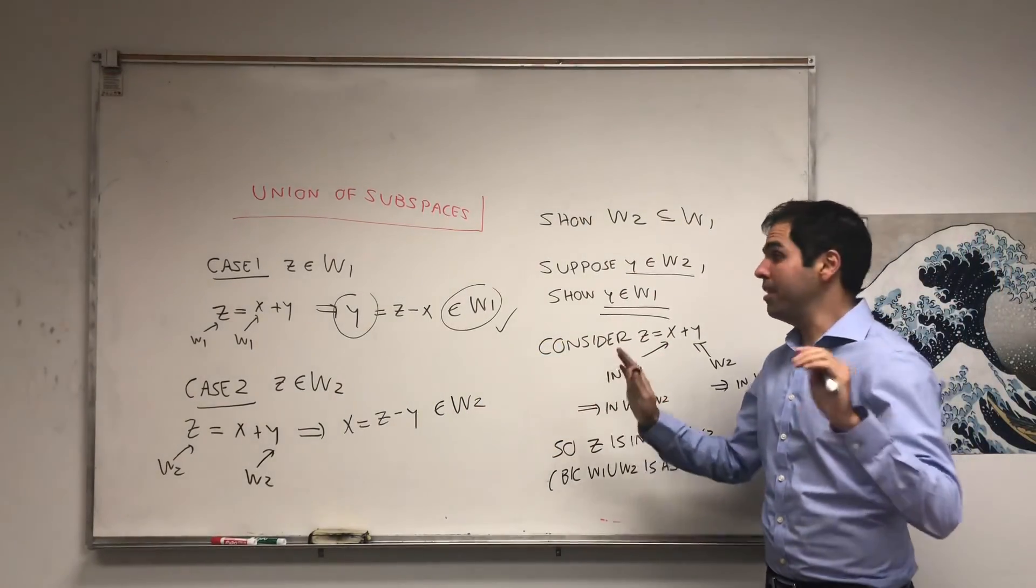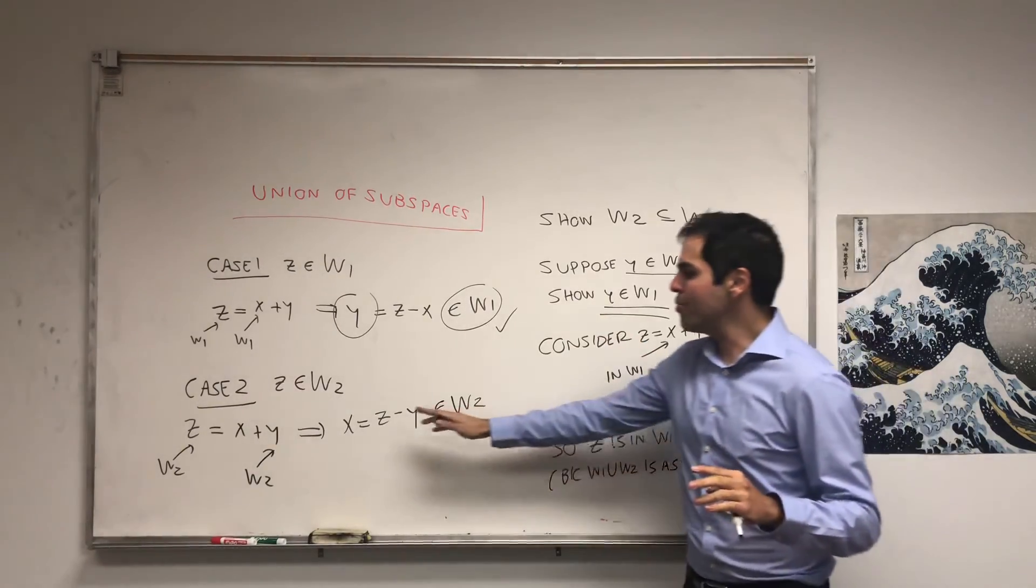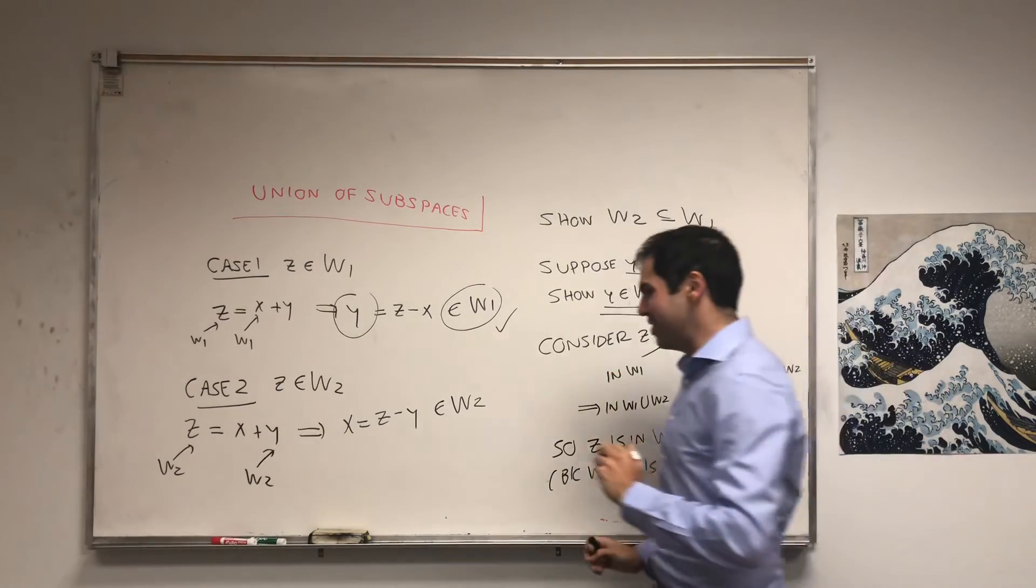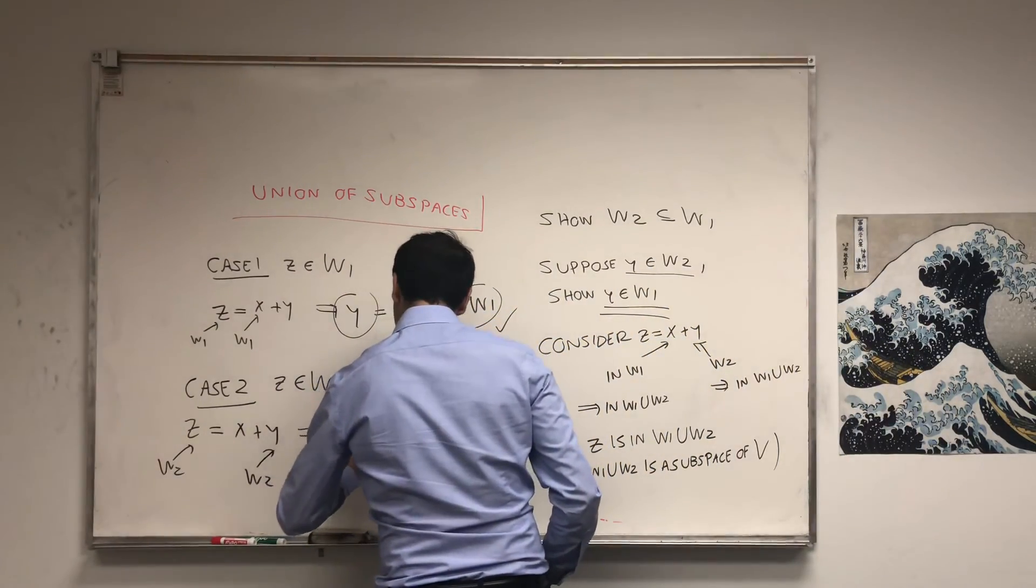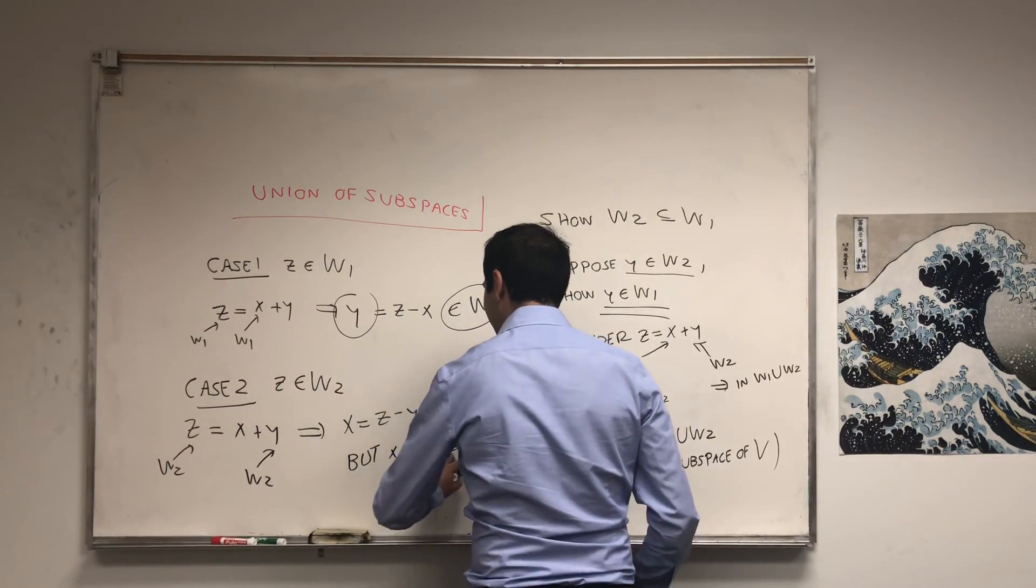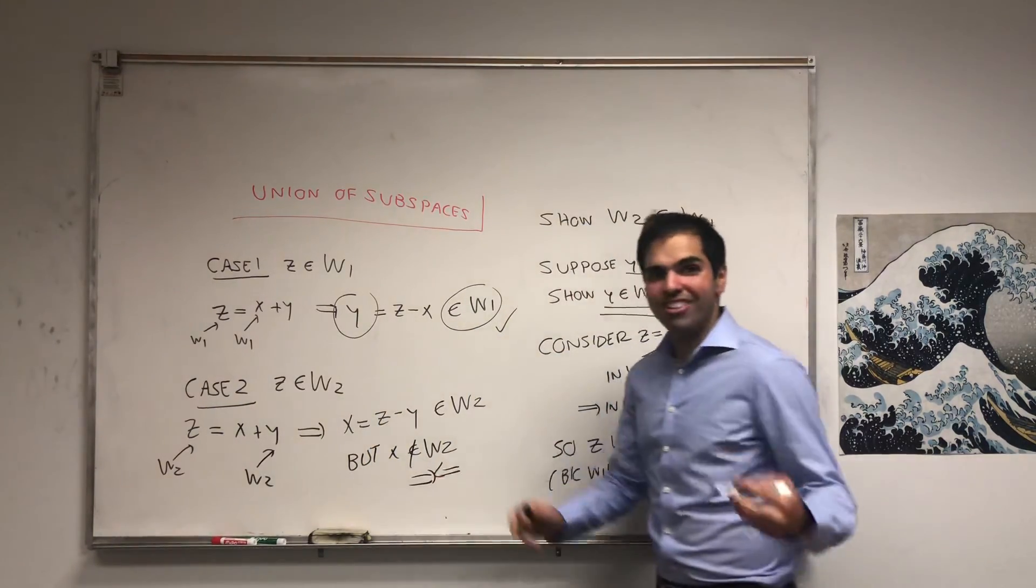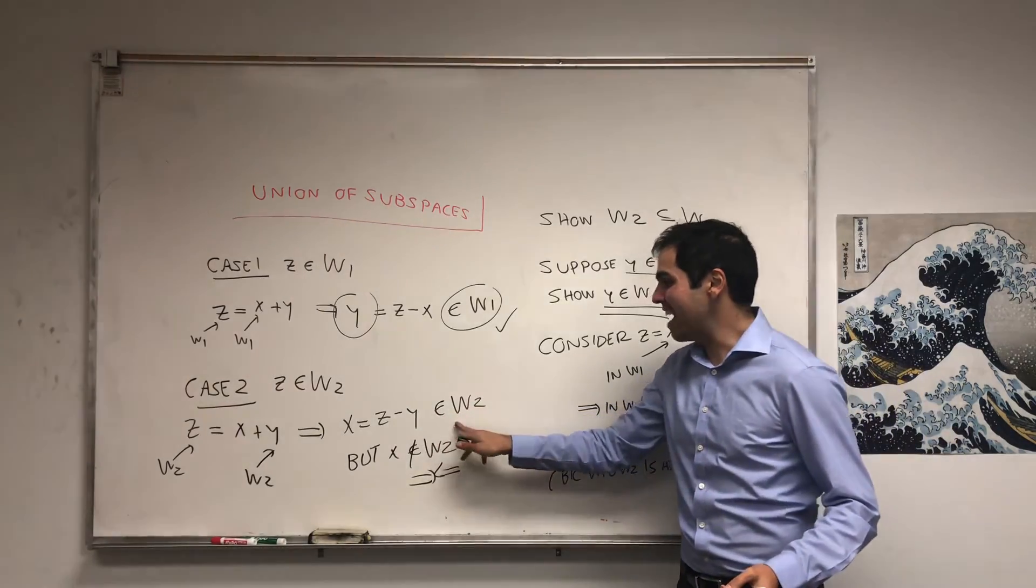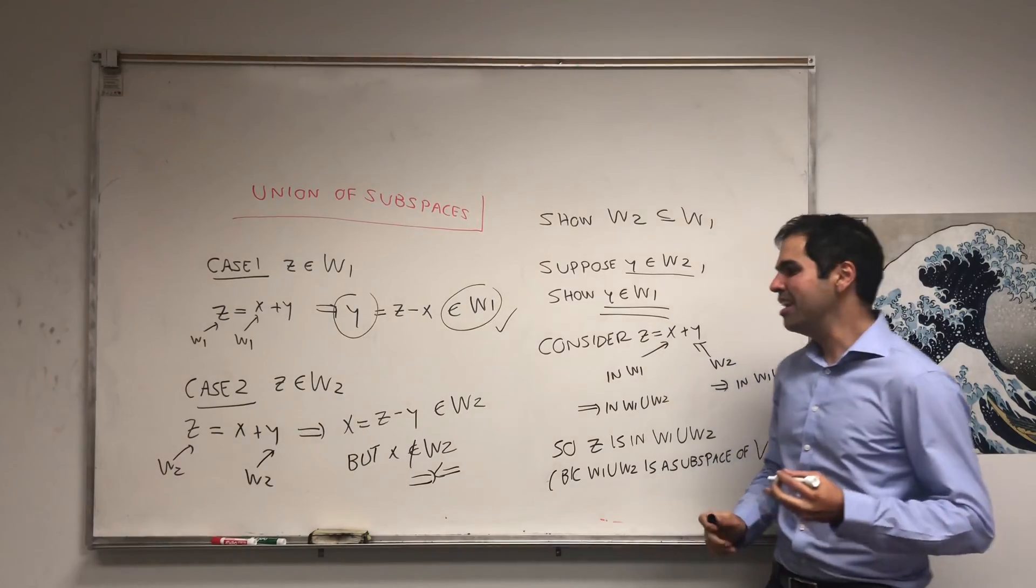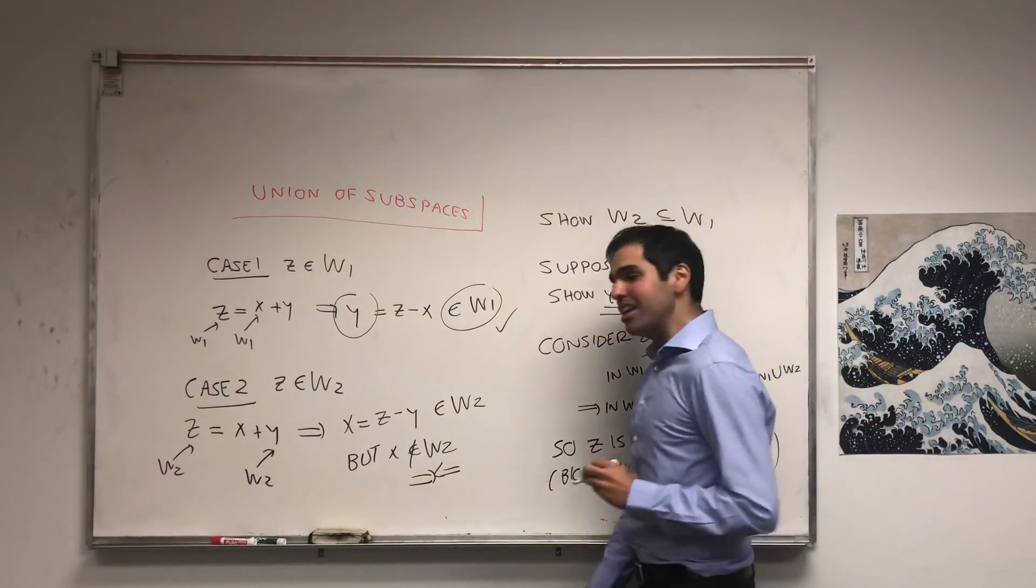And this is a problem. Because, remember, we chose x such that it's not in W2. But x is not in W2 by definition. And that's a contradiction. We're not multitrack drifting. How come this element is both of them? Nope. Can't be both in W2 and not in W2.